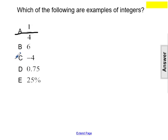C: negative 4 is a negative counting number, so that works. D: 0.75 is not a positive counting number, so that would not fit our definition.